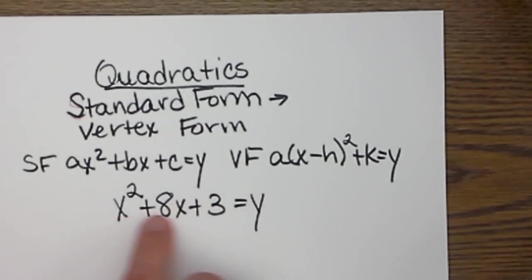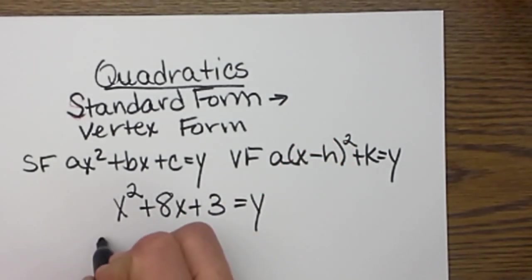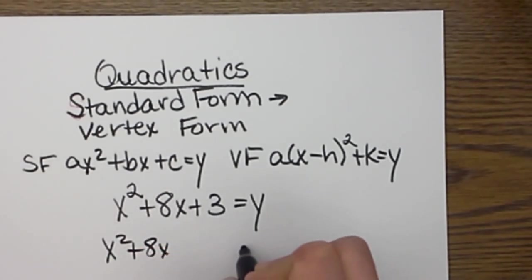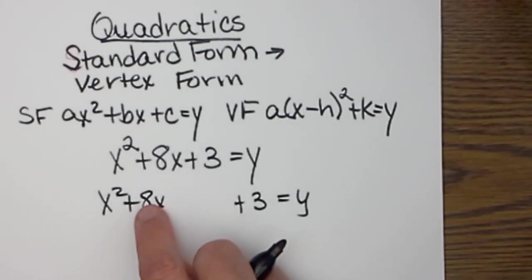What we need to do is group our x values together and complete the square so we can write this as a perfect square. I am going to group the x² and the 8x together and push this positive 3 off to the side because the constant 3 does not complete our square. I am going to take the value b, which is the coefficient to the linear term, so that is 8, and I am going to half it and then square it. That completes our square.